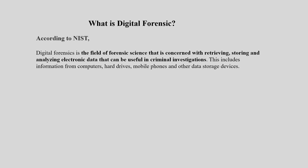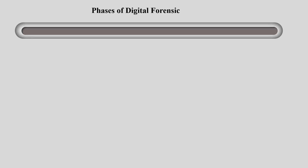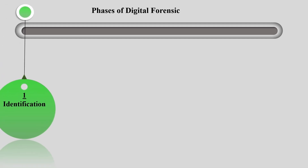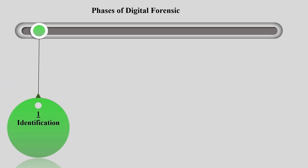Let's see the phases of digital forensic. The first phase is identification. The first stage implies the identification of investigation goals and required resources. The analysts also identify the evidence, the type of data they deal with and the devices the data is stored on. Digital forensic specialists work with all kinds of electronic storage devices such as hard drives, mobile phones, personal computers, tablets, etc.